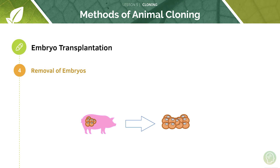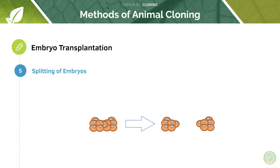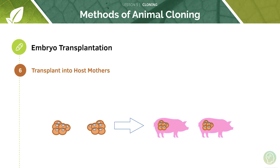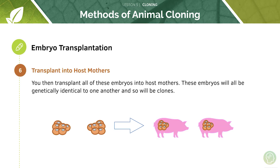We then remove the embryos from the uterus of the inseminated animal and split the embryo apart to form smaller cells. This process must take place before specialisation — the process in which cells develop into different types of cells — so it is done at a very early stage of the embryo. We can then transplant all of these separate embryos into host mothers. These embryos will all be genetically identical to one another, making them clones of each other and of the original.